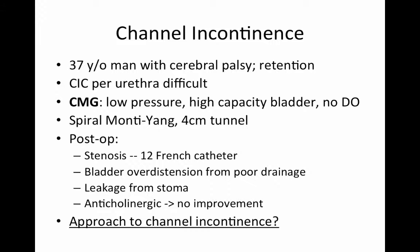Postoperatively, there's stenosis of the umbilical opening, and it can only accept a 12 French catheter. Sometimes the patient has difficulty inserting the catheter, and other times he forgets to catheterize, so he develops bladder overdistension from poor drainage. Eventually there's leakage from the stoma, and this leakage does not improve with an anticholinergic. So the question is: what is the approach to channel incontinence?